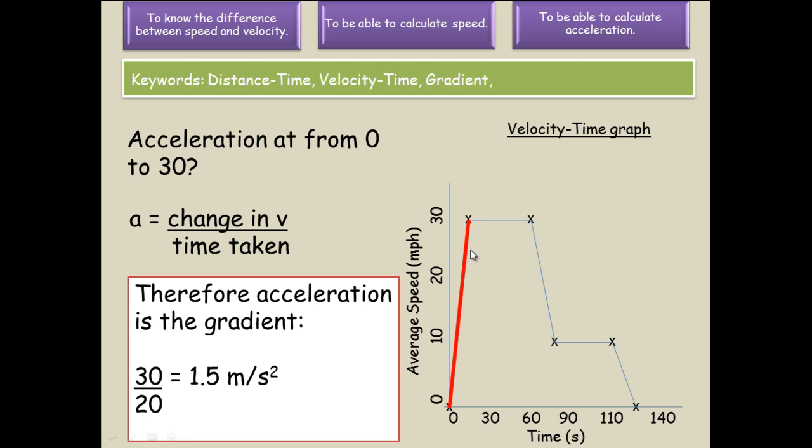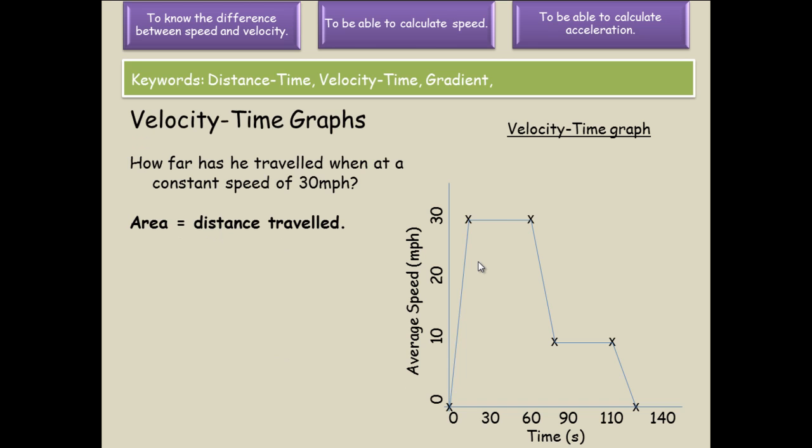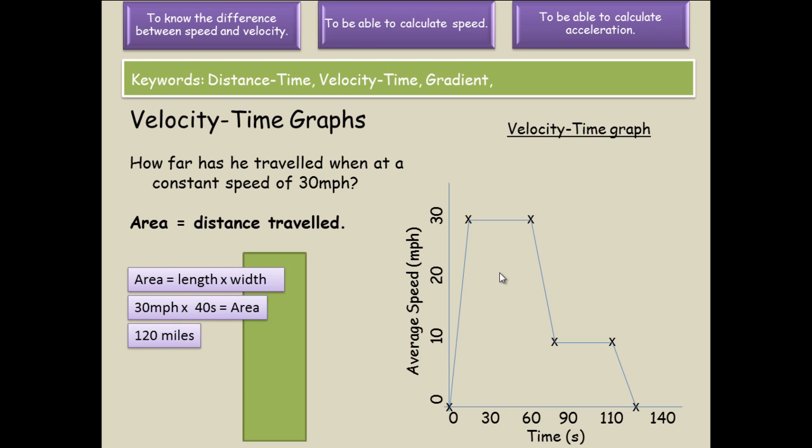Not only can you tell the acceleration from a velocity-time graph, you can also tell the distance moved. The distance moved is the area under the curve for a specific section. The area is the length by the width. In this case, it is 30 times 40 seconds, giving 120 miles total distance moved in that second section.